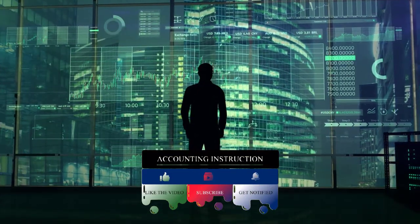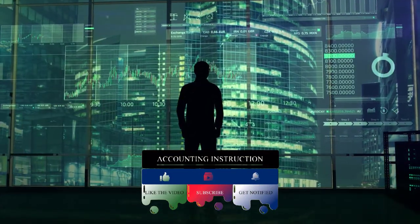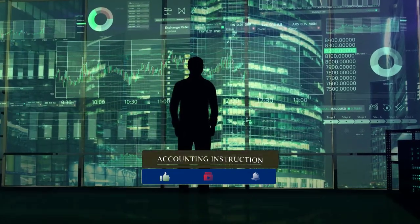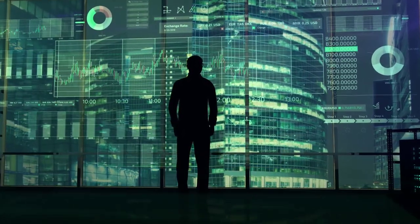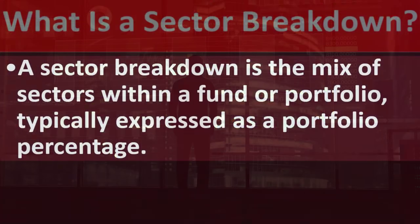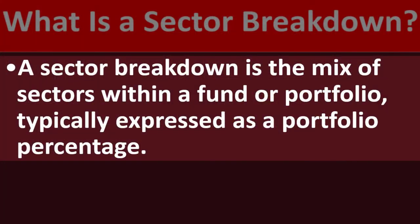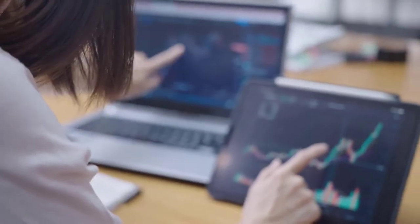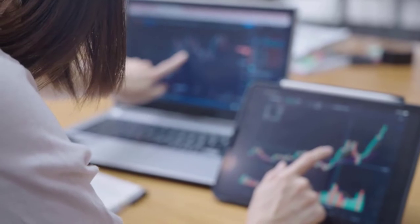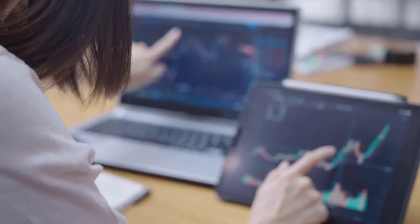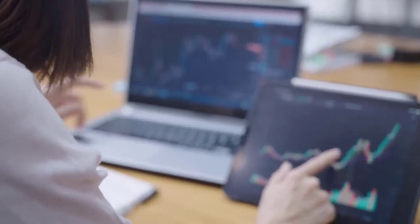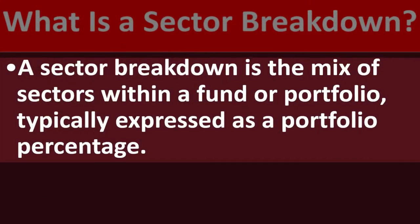We can also use standard benchmark guides to think about how much we should have invested in different sectors. We might use strategies such as investing in index funds, which average the market, to get the diversification thought appropriate for whatever goal we're trying to achieve — be that retirement or saving for tuition, for example.